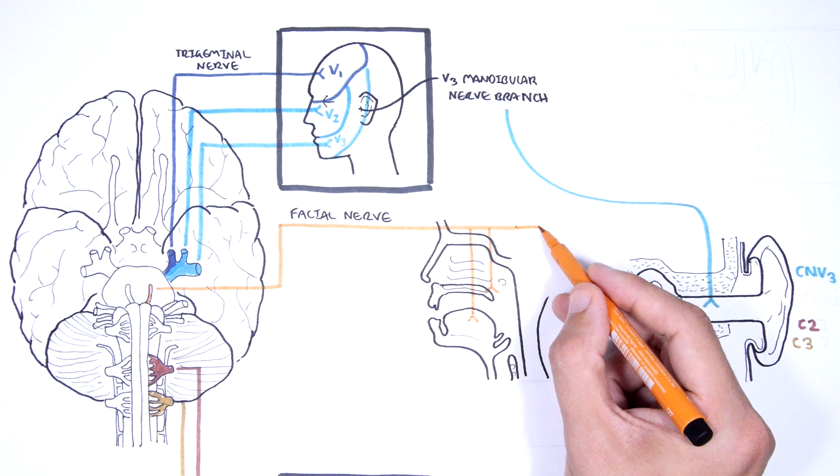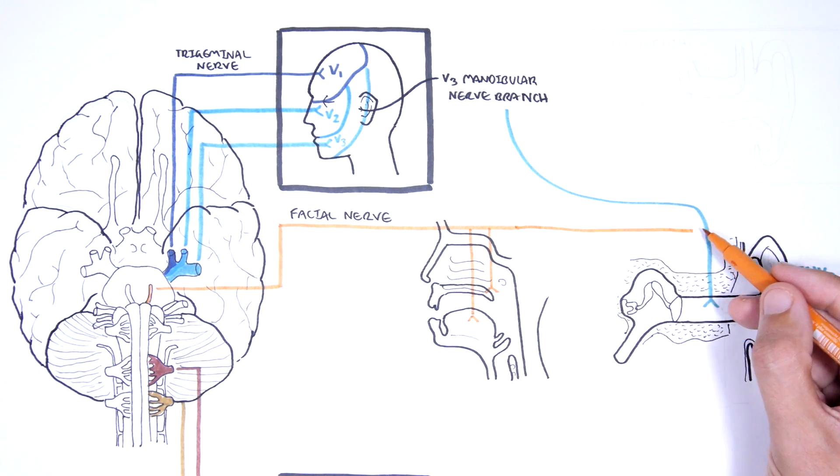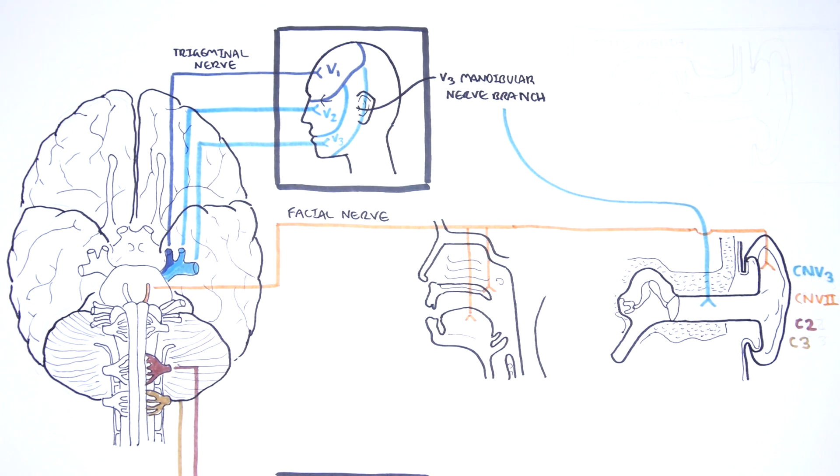The facial nerve travels through what is called the facial canal, which actually is in close proximity to the middle ear. Branches of the facial nerve also innervate part of the external ear and supply the middle ear structures.